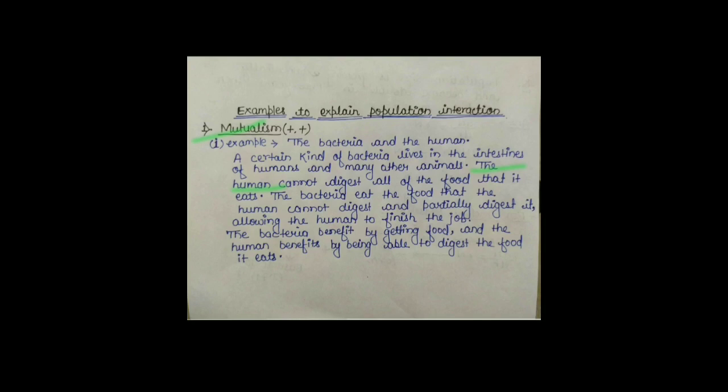और अब यहाँ एक और चीज़ ध्यान रखना है — यह survival के लिए भी जरूरी है। क्योंकि Bacteria Intestine में रह रहा है, अगर उसको food नहीं मिलेगा तो Bacteria मर जाएगा। और Human का proper तरीके से digestion होना भी Human के survival के लिए जरूरी है। इसलिए Bacteria और Human का association — यह Mutualism है, जो Permanent Association है, और Survival के लिए beneficial है।